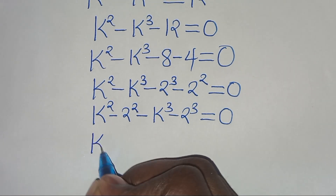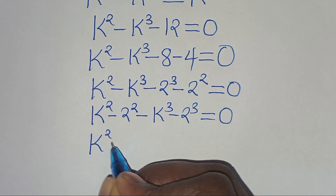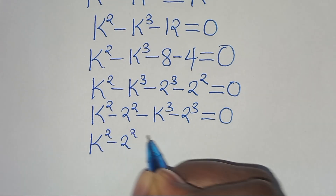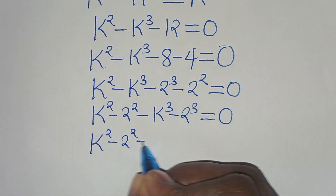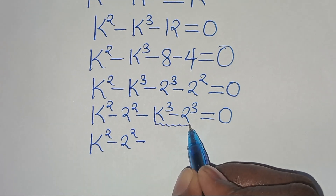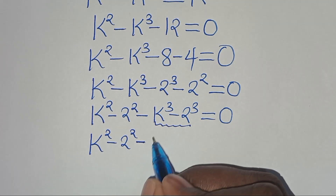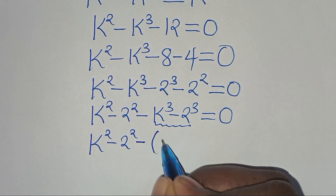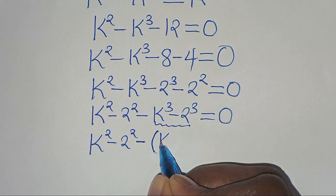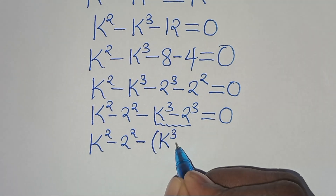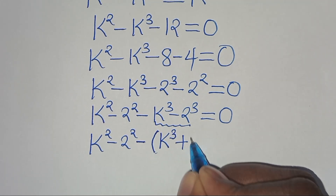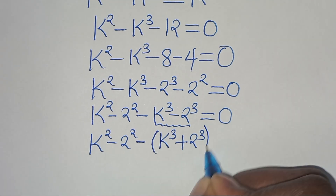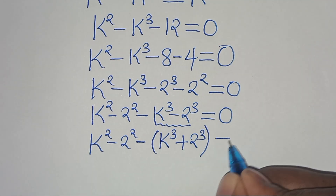We have k squared minus 2 squared, then we can express the remaining term — which is minus k cubed minus 2 cubed — in parentheses as k cubed plus 2 cubed (with a negative sign out front), equal to 0.